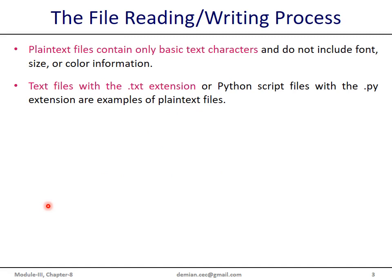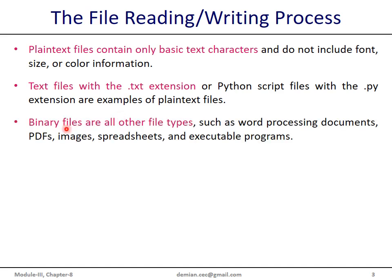In file reading and writing, we have two types of files. One is plain text files, which contain basic text characters and do not include any font size, color, or other formatting information. Text files have the .txt extension; for example, a Python script file has a .py extension. The second category is binary files, which include word processing files, PDF files, images, spreadsheets, and executable program files.